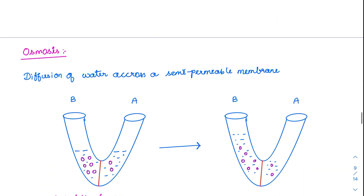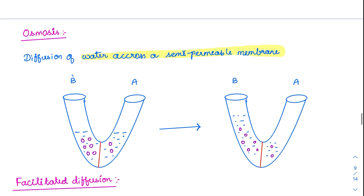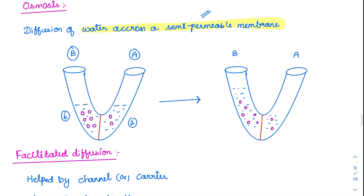Osmosis is nothing but the simple diffusion of water. Diffusion of water across a semi-permeable membrane is called osmosis. For example, if side B has six solute molecules and side A has two, the solutes are not movable but the membrane is permeable to water, so water moves from side A to side B. The final equilibration — osmolarity — will be the same, but side B will have more water and more solutes.